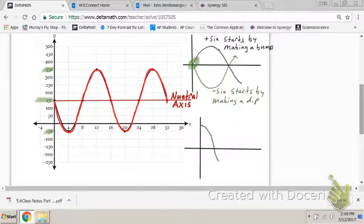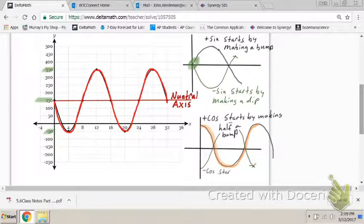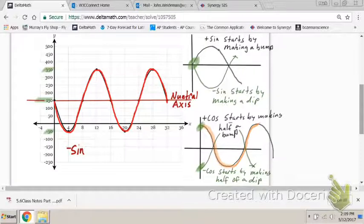Now, what if it looked like this? I see my neutral axis and it doesn't start on the neutral axis. It starts above it, and it looks like it's making half a bump. Or sometime I can have a reflection of that and it starts below the neutral axis and it looks like it is making the latter half of a dip. But either way, look at how this starts. Look at how these two graphs are different. The sine function always starts at the intersection of the y-axis and the neutral axis. The cosine function always starts above or below the neutral axis.